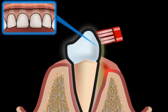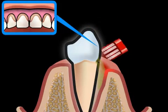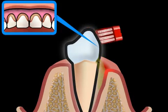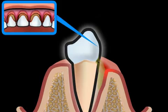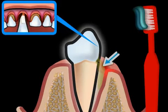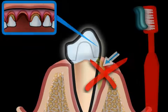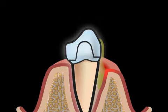Eventually, as periodontitis progresses, it develops its own dynamic, so that even if you change your brushing habits and start thoroughly removing plaque, you can no longer stop or slow the development of the disease. Thorough cleaning of the bone pockets is no longer possible. Therefore, it's important to always remove plaque thoroughly from the surface of the tooth.